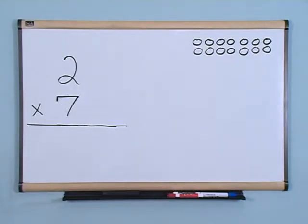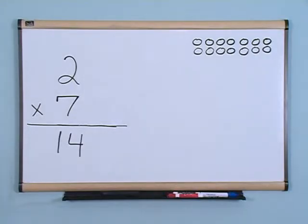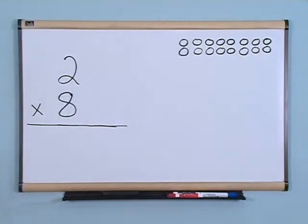Two times seven is? Fourteen. Two times seven is fourteen. Two times eight is? Sixteen. Two times eight is sixteen.